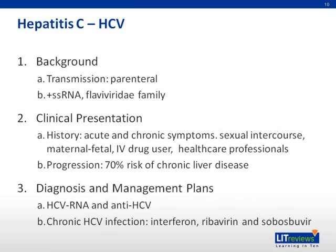Moving on to hepatitis C, which is transmitted parenterally and is a positive single-stranded RNA virus, part of the Flaviviridae family. Acute hepatitis C is often subclinical, and most patients present with chronic hepatitis C, which is asymptomatic and diagnosed based on screening blood tests. Risk factors include multiple sexual partners, maternal-fetal transmission, IV drug use, or healthcare professionals. Progression to chronic liver disease is around 70%, with high risk of liver cirrhosis and HCC. Patients can be diagnosed with HCV RNA or anti-HCV markers, and treatment includes interferon, ribavirin, or sofosbuvir.